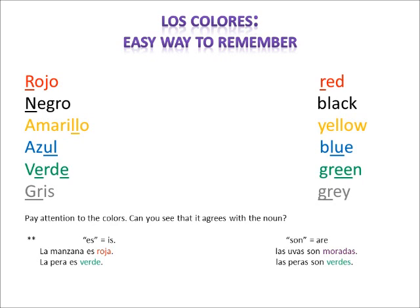Verde — what color in English do you know that has two letters E? Green. Verde — green. Gris — what color in English do you know that has the letter G and the letter R? Gray. Gris — gray.